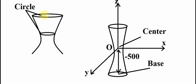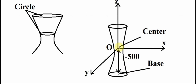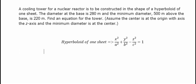The diameter at the base is 280 meters. If we draw a plane parallel to the base, we can see a circle. The question assumes the center is at the origin with the Z-axis as the vertical axis, and the minimum diameter is at the center. We use minus 500 for the base because the center is the origin, so we measure from the origin down to the base.